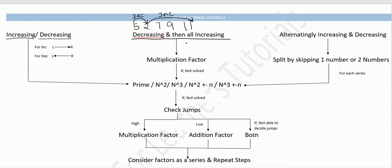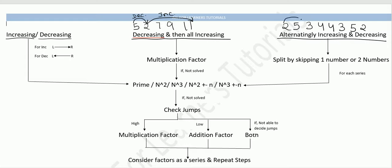The third type is an alternating series — alternately increasing and decreasing. For example: 2, 5, 3, 4, 4, 3, 5, 2 — you can see terms are alternately going up and then down.